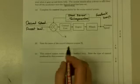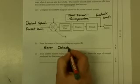Next, it says, state the name of the control diagram symbol X. If you don't know this one, then you really are on the wrong course. It's an error detector.